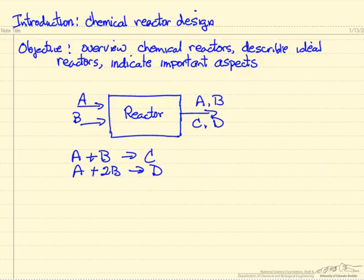If we look at a generic reactor where we're feeding two reactants, A and B, some fraction of them react and we make products C and D. We'll look at the case where there's two reactions: A plus B can form C, or A plus 2B can form D.